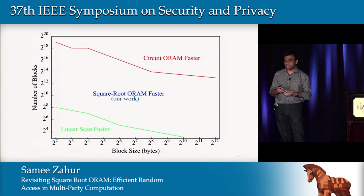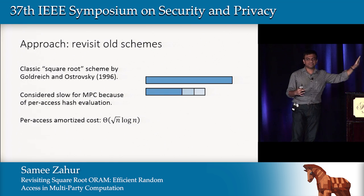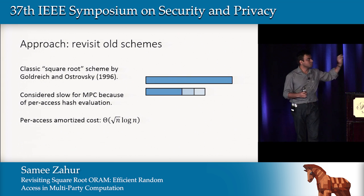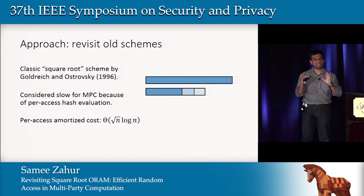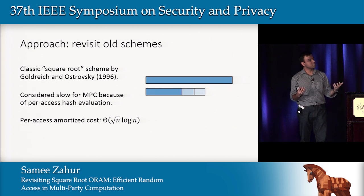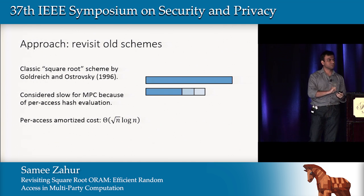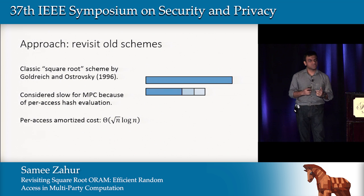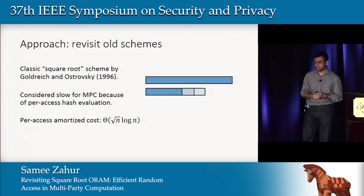To accomplish this, we looked at older schemes — specifically the square root scheme by Goldreich and Ostrovsky from 1996. It's really simple, but was initially considered impractical for MPC because it requires securely evaluating hash functions inside a cryptographic protocol. Everyone said it would be intractable for MPC, so that's the one we decided to focus on.